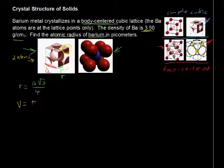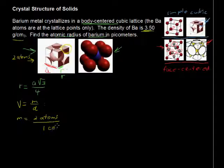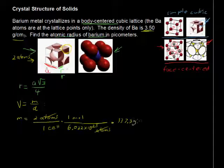Volume equals mass divided by density, and the mass, before we get to that, the mass equals these two atoms, this is the mass of just one cell, two atoms per one cell, multiplied by one mole, divided by Avogadro's number, 6.022 times 10 to the 23rd atoms, so we cancel out atoms. Now, we have the units are mole per cell. We don't want mole per cell, we want grams per cell to get the mass. And, to get that, we have to say, what is the molar mass of barium, and that is 137.3 grams of barium per one mole of barium.